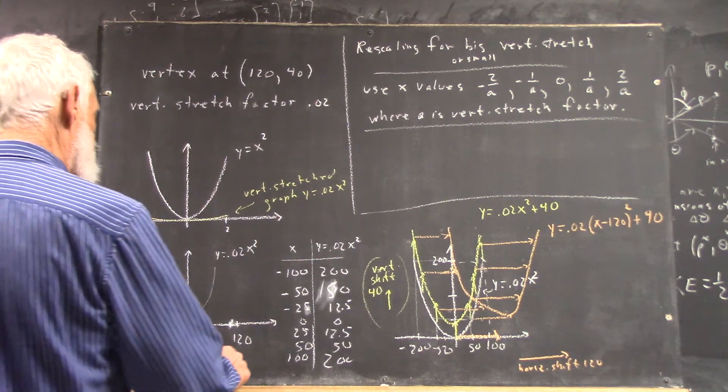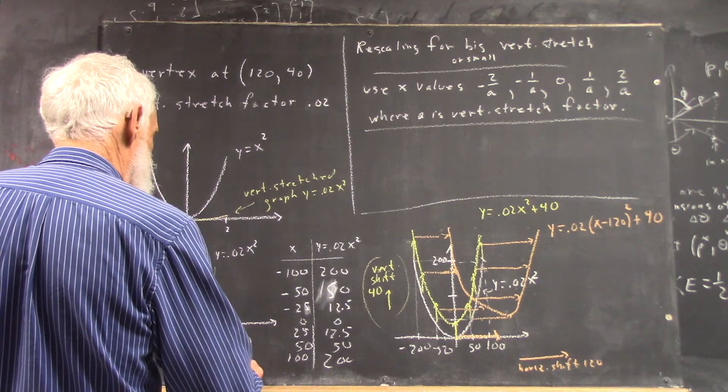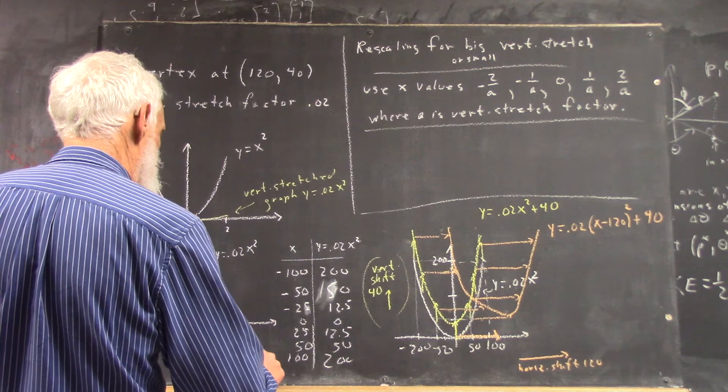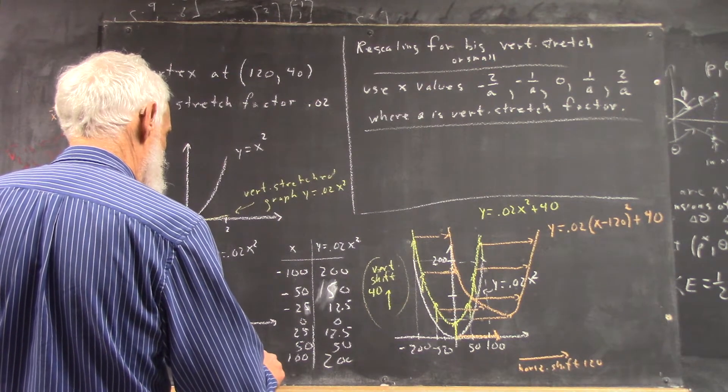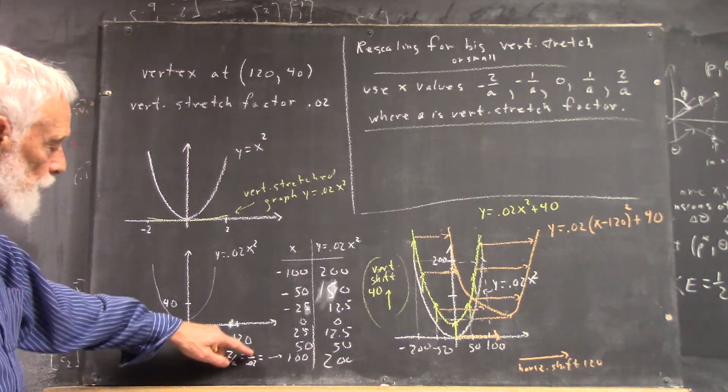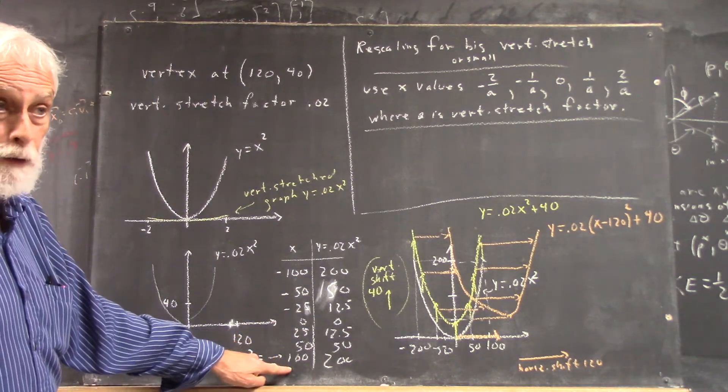So I can say here that 2 over a would be 2 over 0.02, which is 100, right?